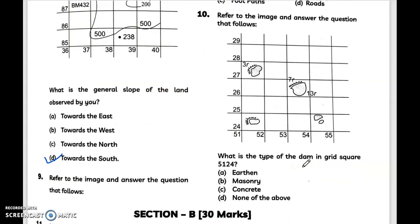Question number 10: refer to the image and answer the following. What is the type of the dam in grid square 5124? Answer is B, masonry.